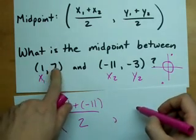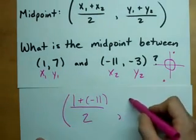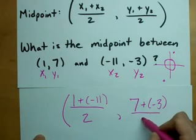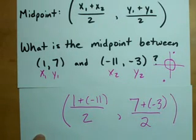Then 7 and negative 3 are my two y values. Take the average by adding them together and dividing by 2.